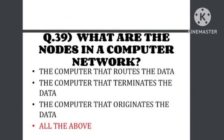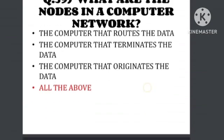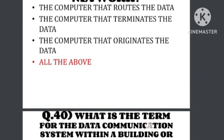Question number 39: What are the nodes in a computer network? Computer network nodes include: the computer that originates the data, the computer that routes the data, and the computer that terminates the data.